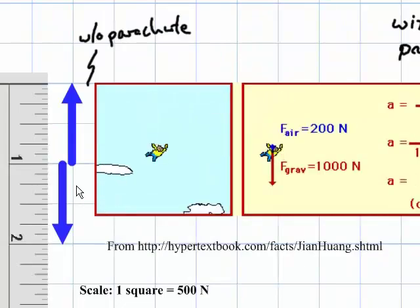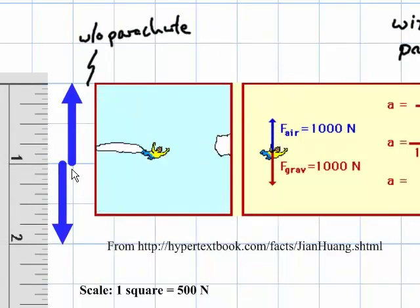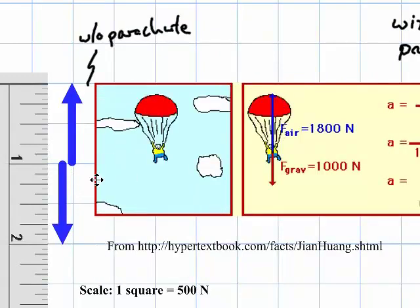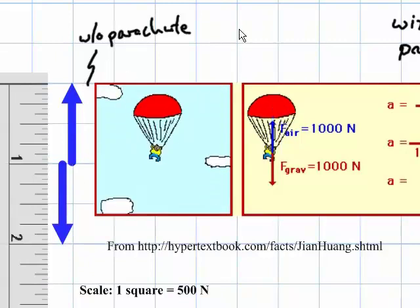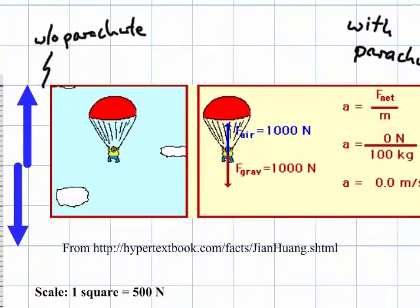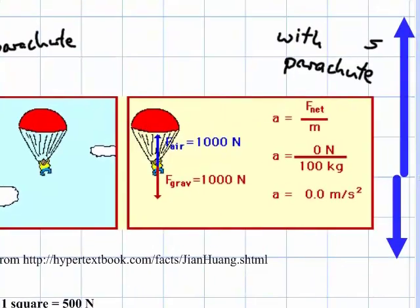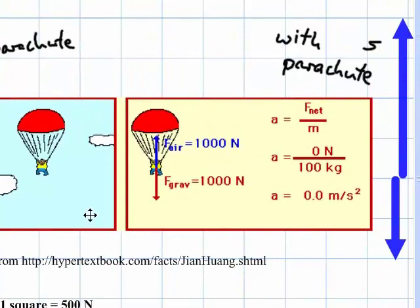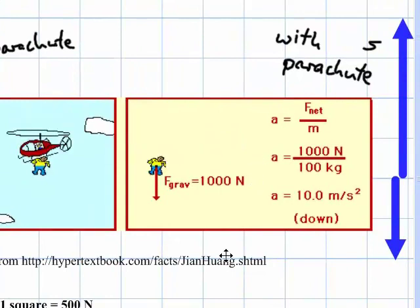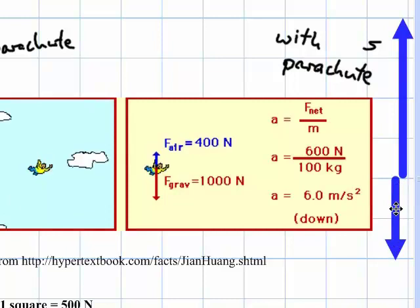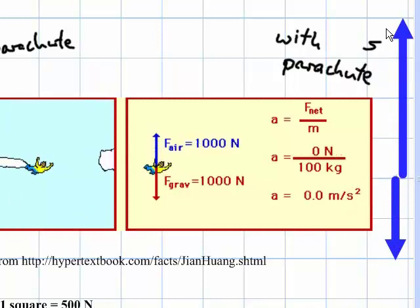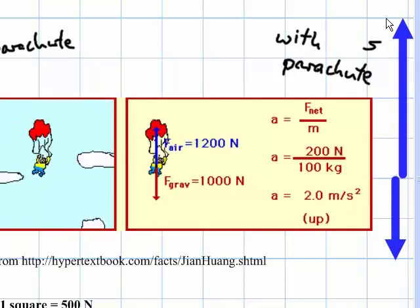This here is before the parachute opens. Notice each square is 500 newtons, so 1,000 newtons down and 1,000 newtons up — again, that's without the parachute. And then the other one is with the parachute open: 1,000 newtons down and 2,000 newtons up.